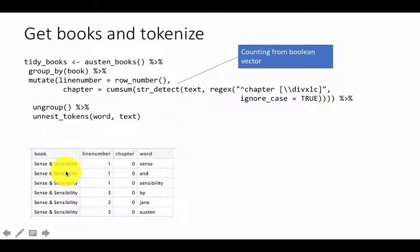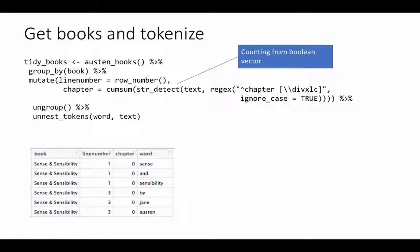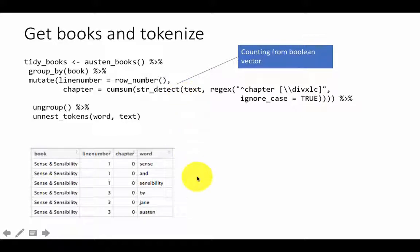So you've got Sense and Sensibility, line number one, chapter number zero, the first word is 'sense,' and so on. Clearly, where the chapter is zero, all that stuff is coming from the title page of the book. Then as you keep going down, you start seeing text from the first chapter, the second chapter, and so on. This part about what we did, I had explained in detail in the previous week.